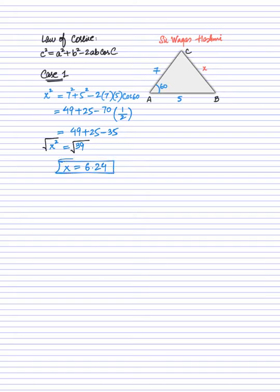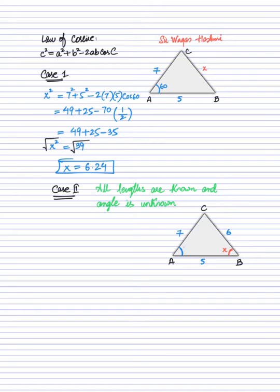That's how you apply the law of cosines. Now in case number two, when all the lengths are known and the angle is unknown, you also need to apply the law of cosines. We need to learn how to solve this type of question where the three sides are known and the angle X is unknown. We discussed in case one what the law of cosines is and how to apply it — we are going to apply the same logic here.